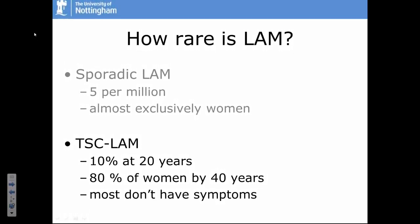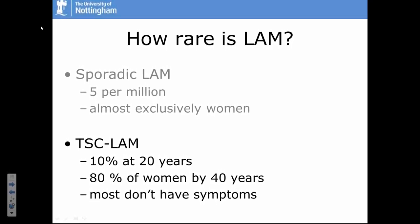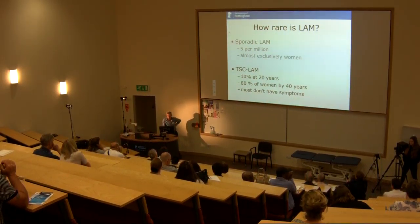LAM is almost exclusively a disease of women. In tuberous sclerosis, LAM is actually quite common. If you do CT scans in adult women with tuberous sclerosis, by age 20 about 10% have lung cysts consistent with LAM, and by about 40 years of age roughly 80% of women with tuberous sclerosis will have lung cysts consistent with LAM. Interestingly, many of those women don't develop symptoms. There are probably women with the sporadic form of LAM who don't know they have it.